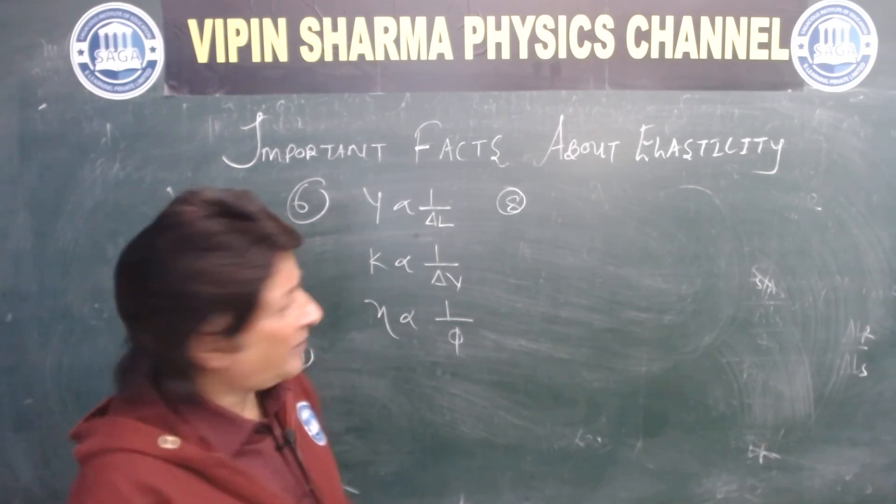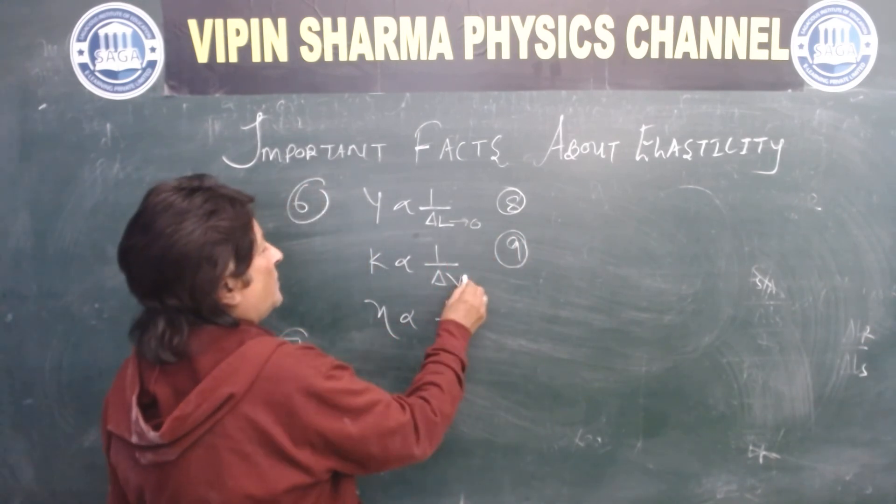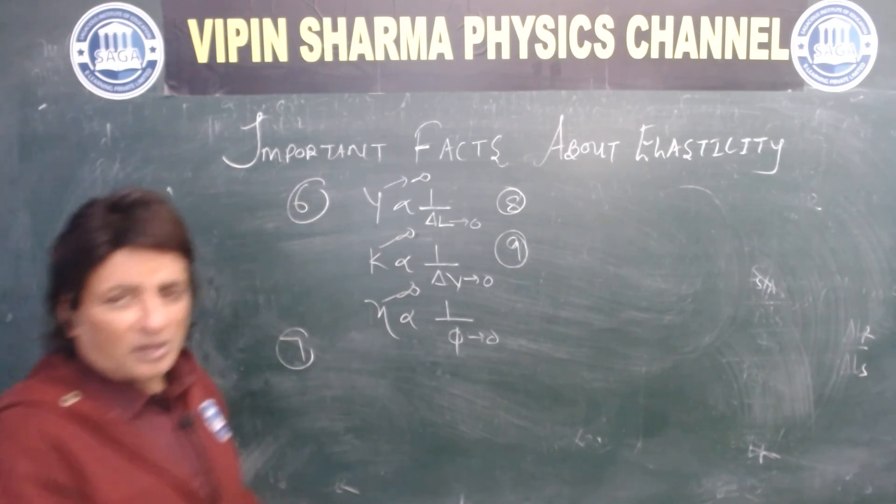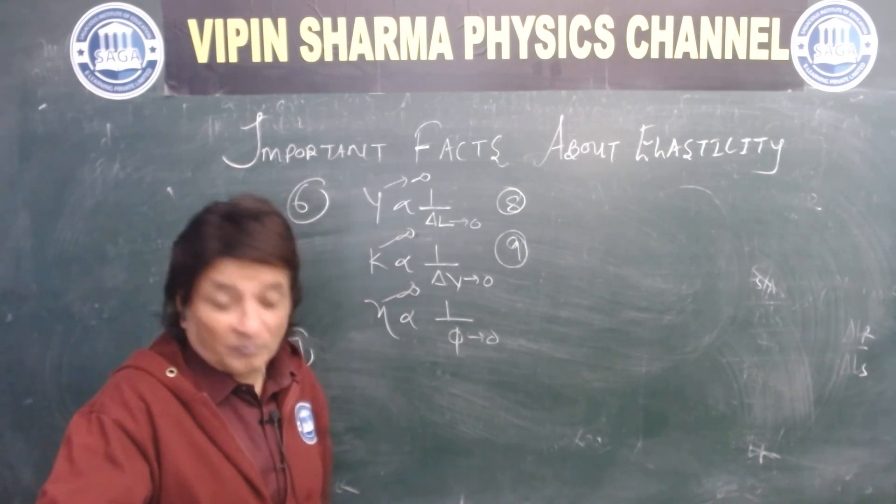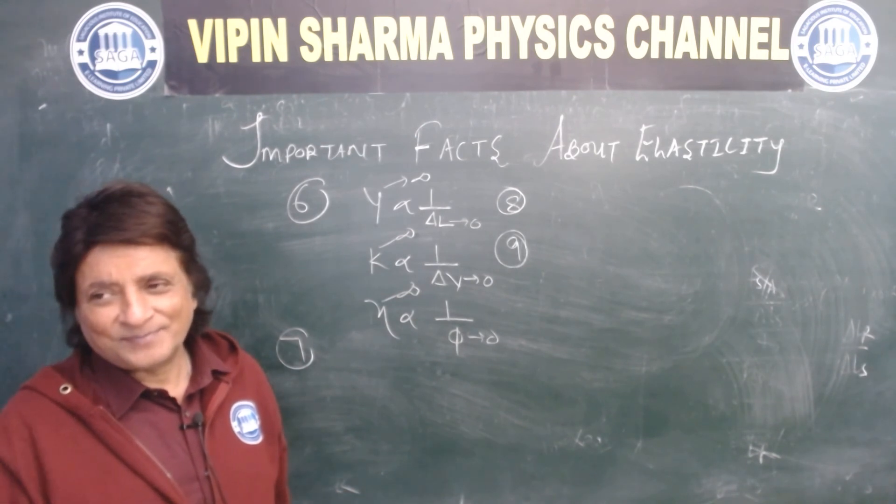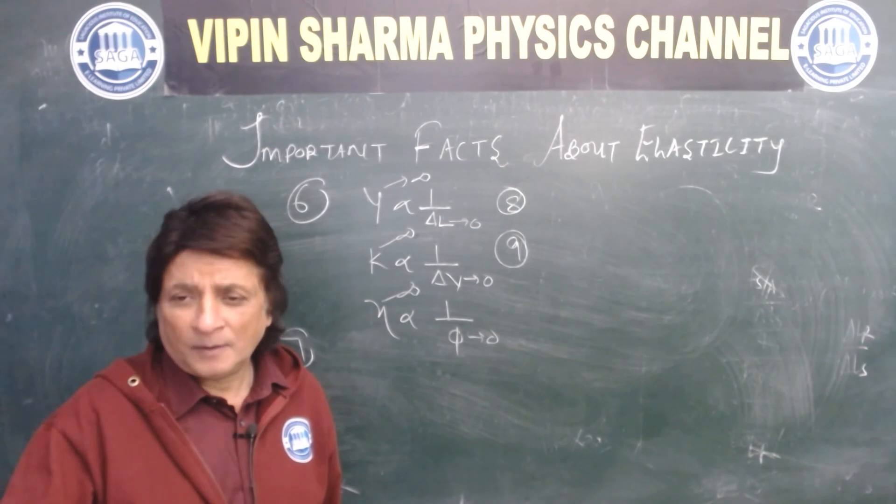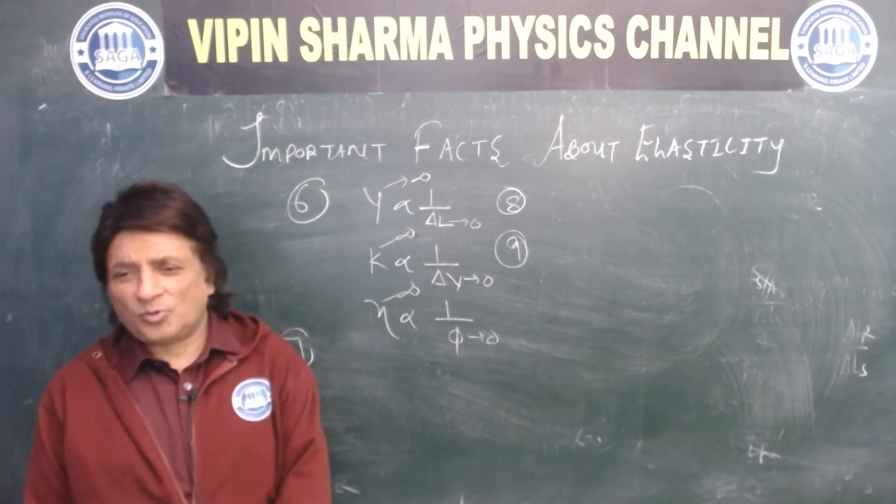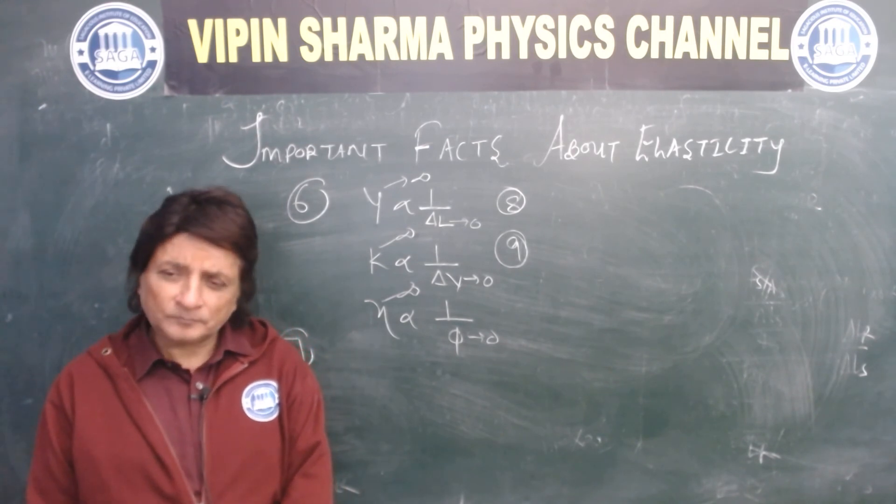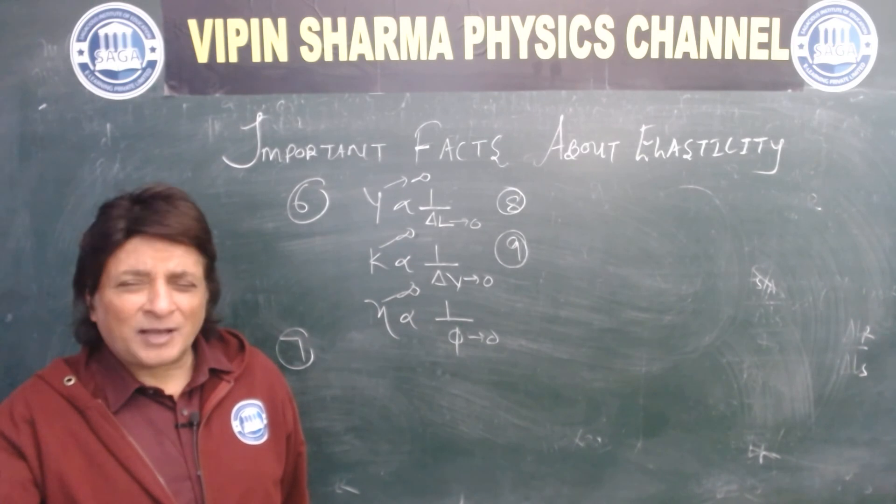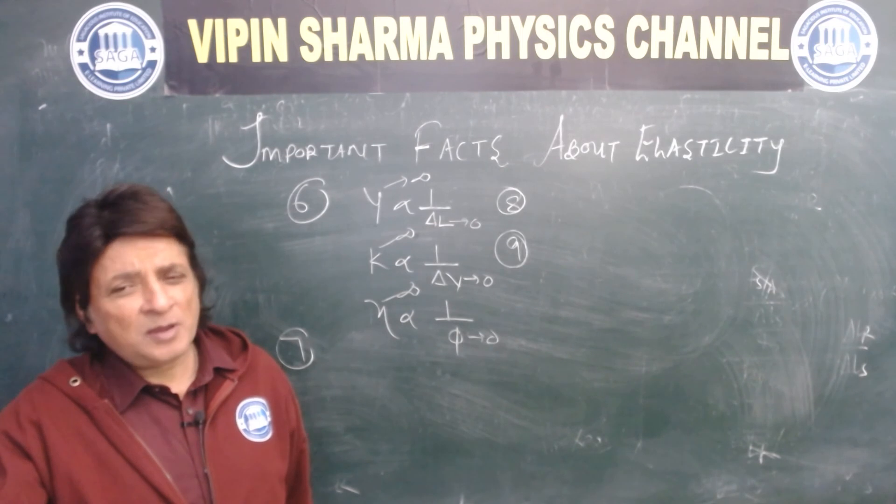For a rigid body, fact number nine. Then delta L zero, delta V zero, phi zero. Therefore Y infinity, K infinity, eta infinity. So for a rigid body, Young's modulus, bulk modulus, and modulus of rigidity, they are all tending to infinity. Simple. Diamonds are close to a rigid body. Diamonds are very rigid. They are close to a rigid body. Therefore modulus of elasticity for diamond is infinity. It is incompressible, so it will be infinity.